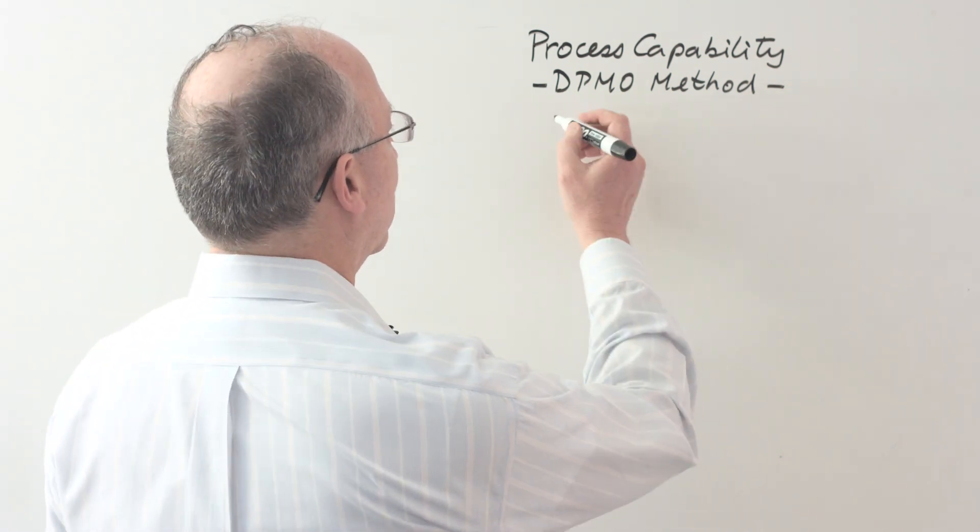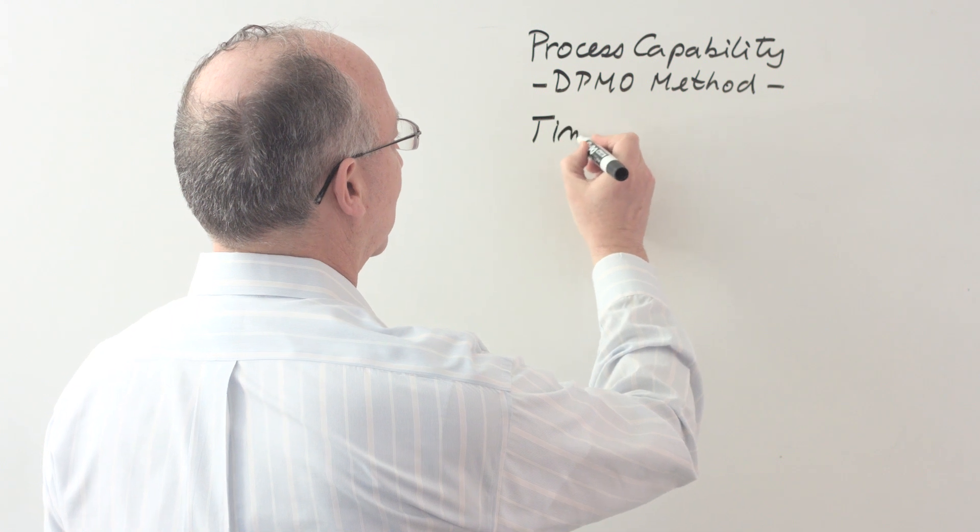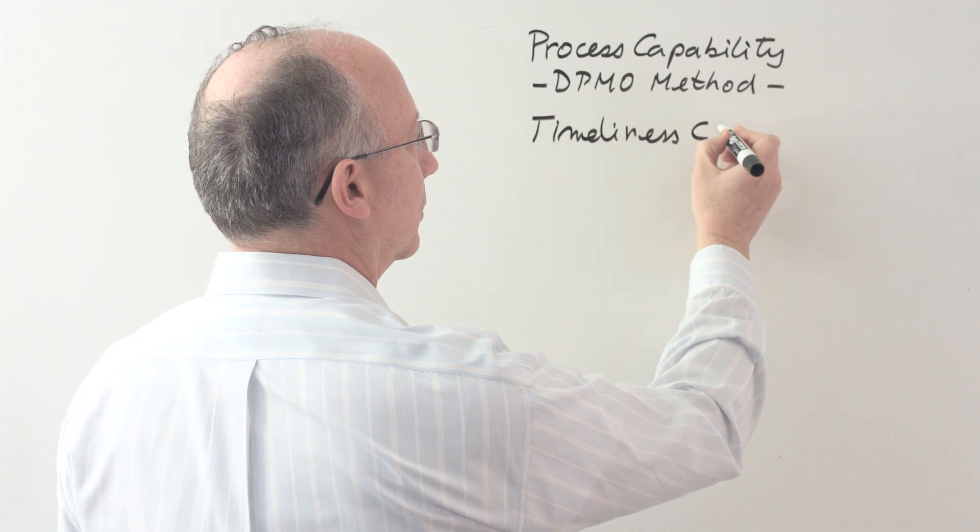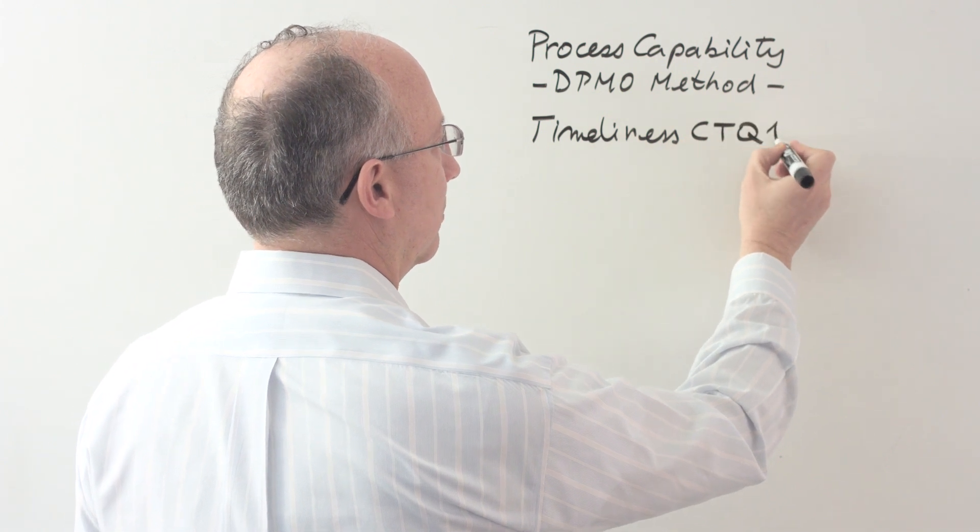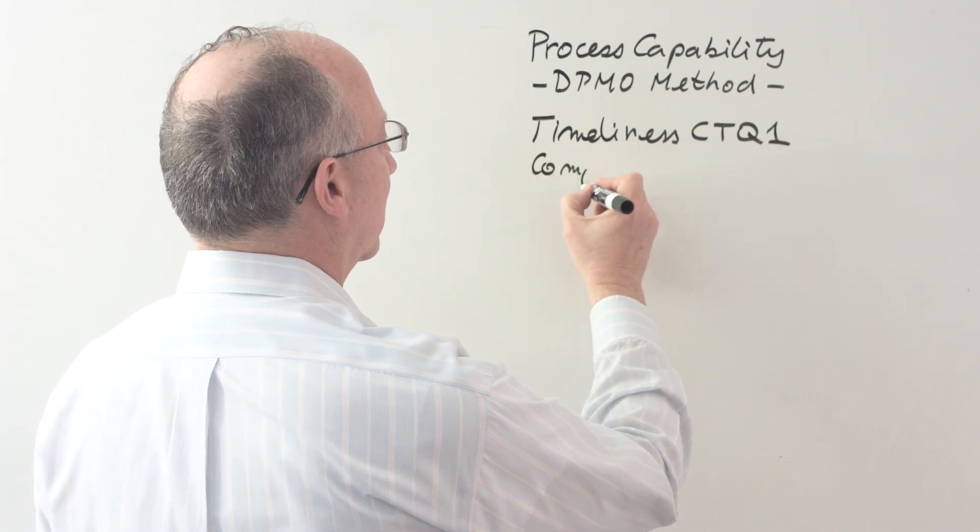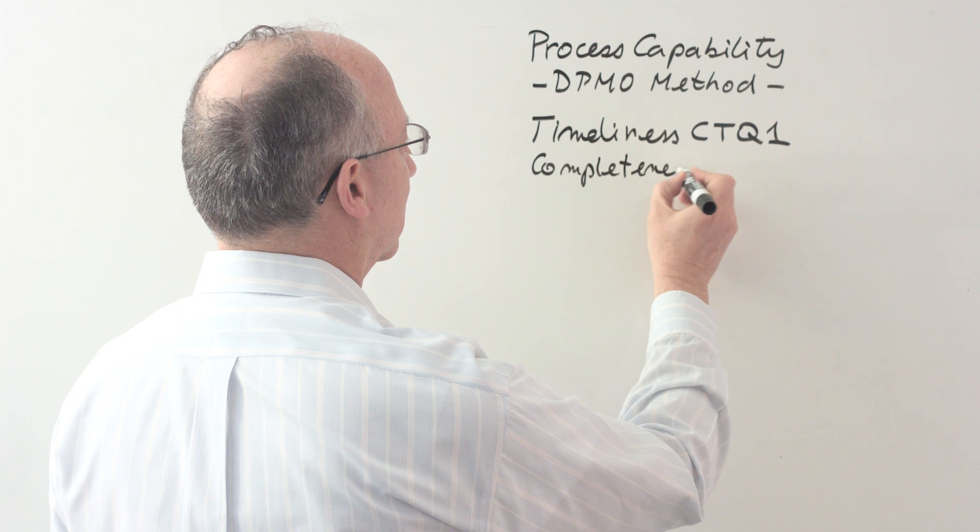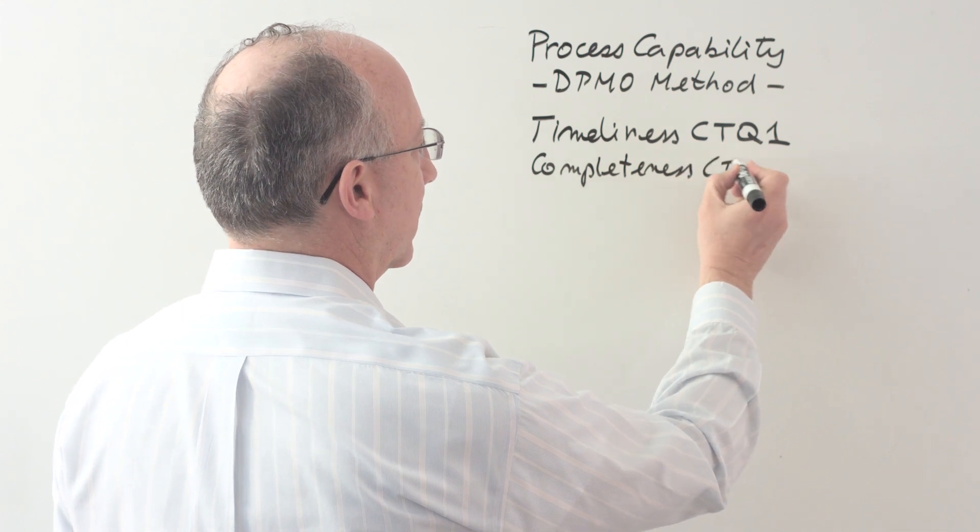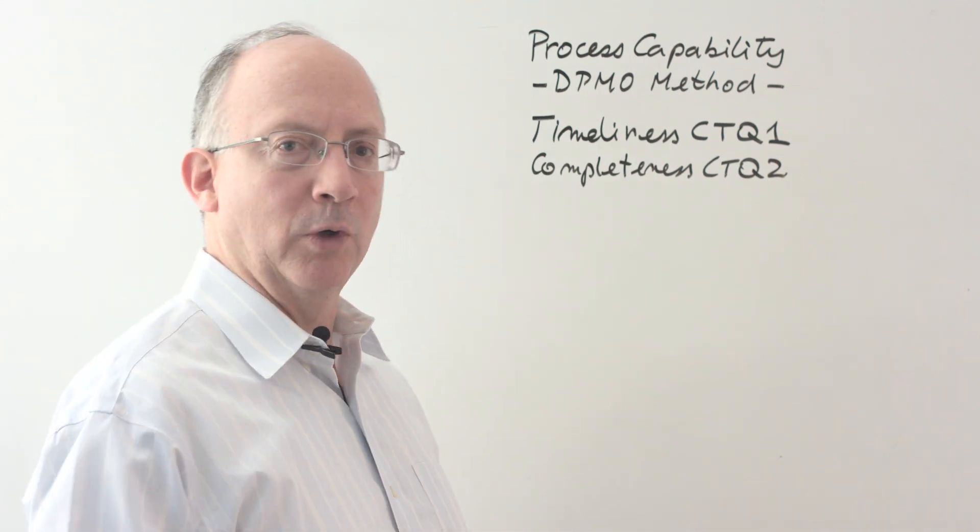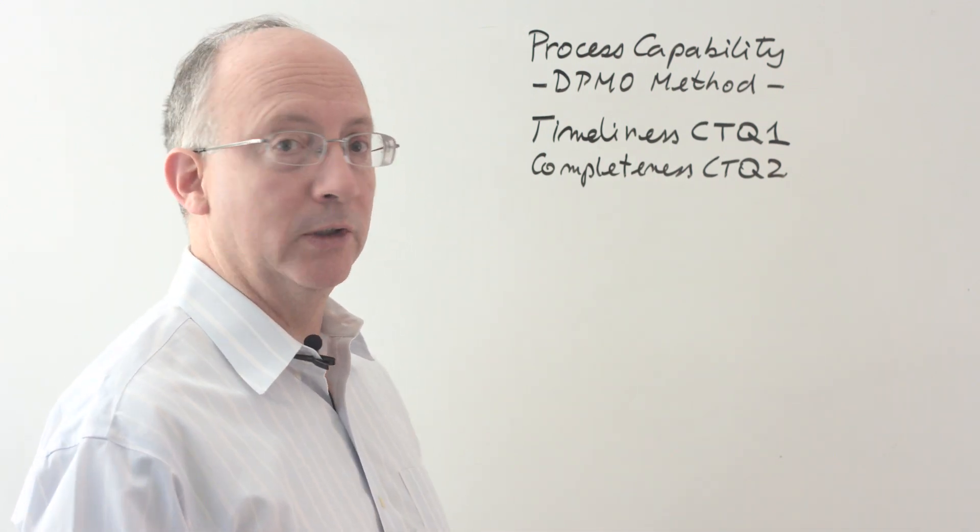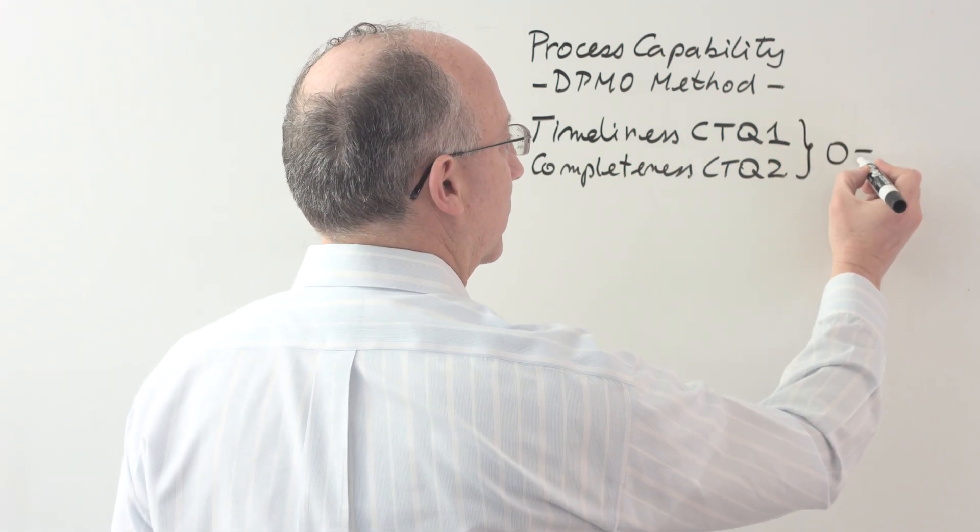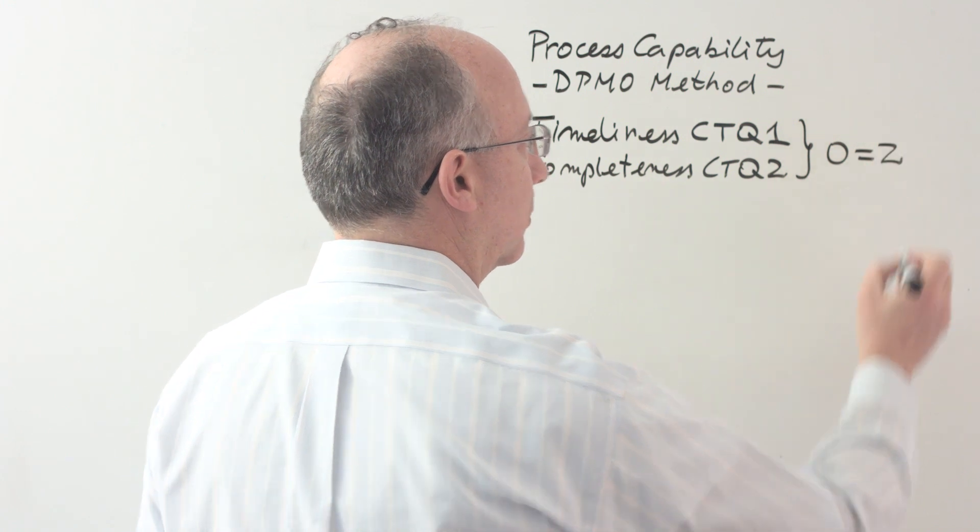On one hand, therefore, we're going to have timeliness and this we will call a critical to quality one metric, CTQ1. And then the other one is going to be completeness, CTQ2. In the language of the formula, what we're talking about here is the fact that there are two opportunities for quality. So, the number of opportunities, or letter O, is going to be equal to number two.